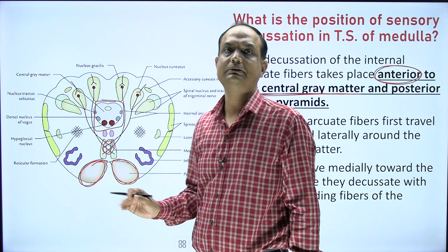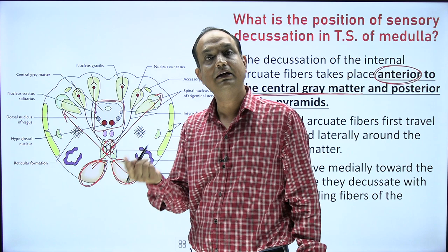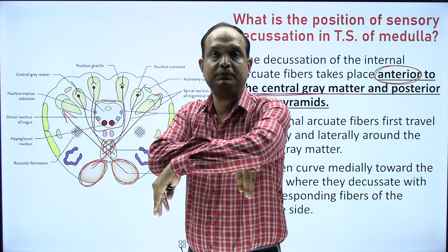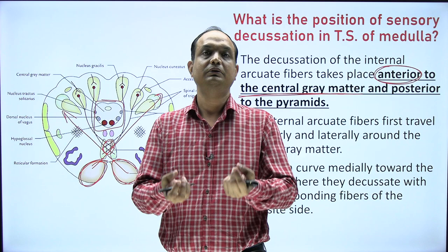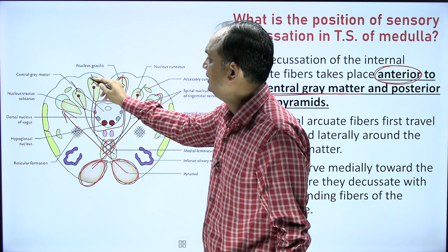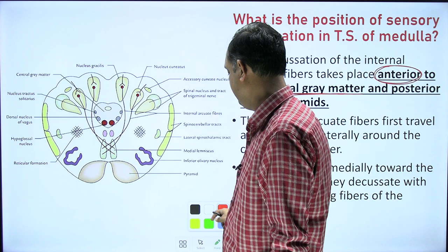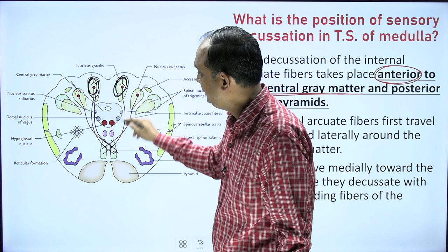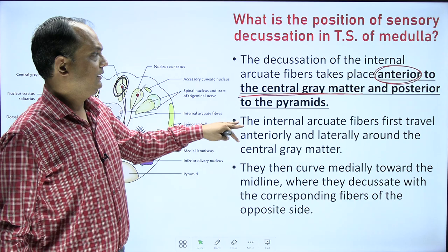Many students confuse the sensory decussation with the pyramidal decussation. That is not correct. The pyramidal decussation involves descending fibers that change position from ventral to the lateral side, becoming the lateral pyramidal tract. Here we are talking about ascending fibers — the sensory decussation. The fasciculus gracilis and cuneatus ascend in the posterior part as first order neurons, relay in the nuclei, and the second order neurons cross anteriorly.